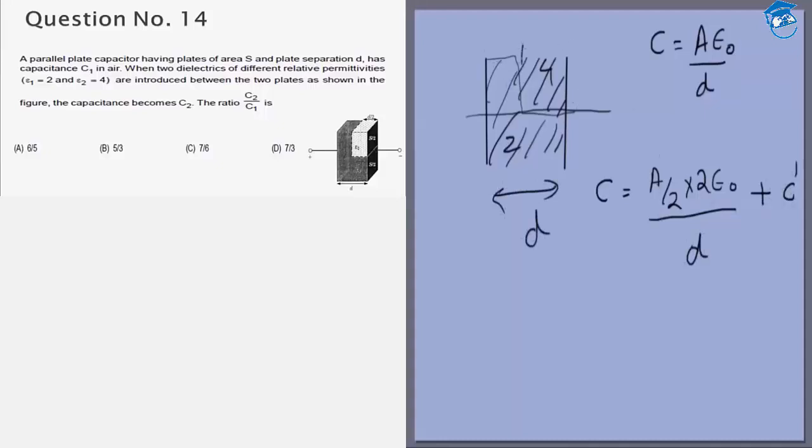Now for the capacitance of this we can again divide it into 2, whereas now these are in series. So now the equation is 1 by C dash is equal to the sum of the capacitance of this. So D by A epsilon 0.